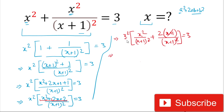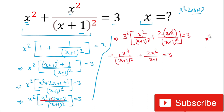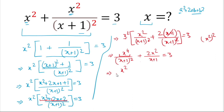After multiplying through by x², we get x⁴/(x+1)² + 2x²/(x+1) = 3. We can write x⁴ as (x²)², so the expression becomes [x²/(x+1)]² plus 2·[x²/(x+1)] minus 3 = 0.